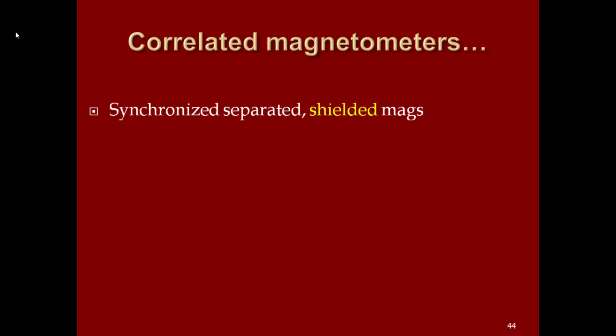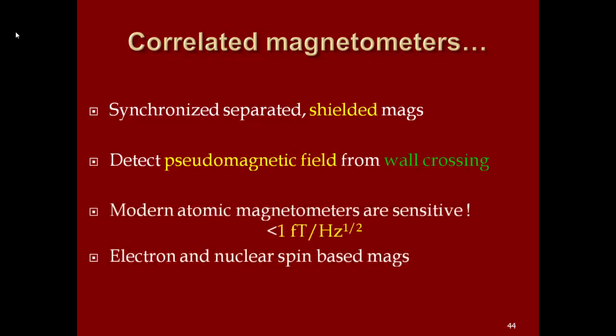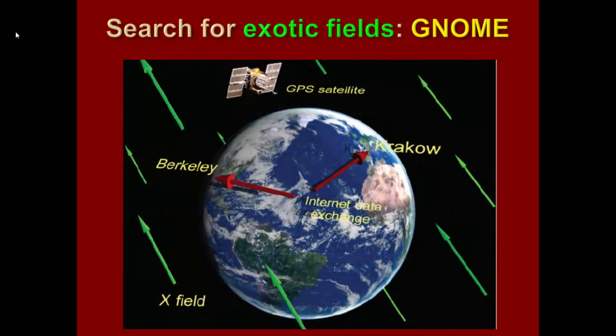So just to give you an idea how this works, we have a bunch of atomic magnetometers in different parts on the planet. Five minutes? Okay. And we shield them as well as we can—four or five-layer magnetic shield. So they're actually not sensitive to the real magnetic field. But these exotic fields, they don't interact very strongly with the matter, so they go very nicely through the shield. And then what we do is we correlate the readings of these magnetometers. And this way we suppress the spurious signals and also can determine where the wall is coming from.